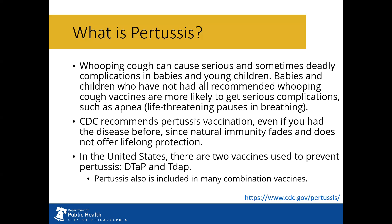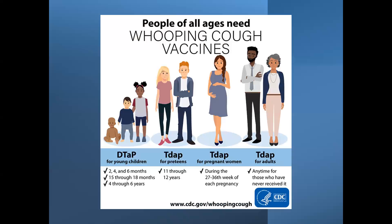The CDC recommends pertussis vaccination even if you had the disease before, since natural immunity fades and does not offer lifelong protection. In the United States, there are two vaccines used to prevent pertussis — DTaP and Tdap — and pertussis also is included in many combination vaccines. Therefore, people of all ages need pertussis or whooping cough vaccines.